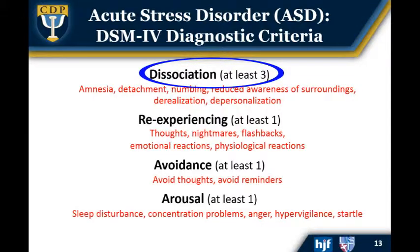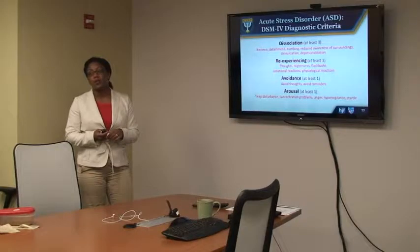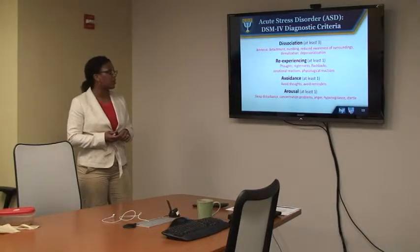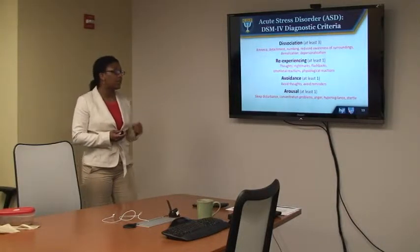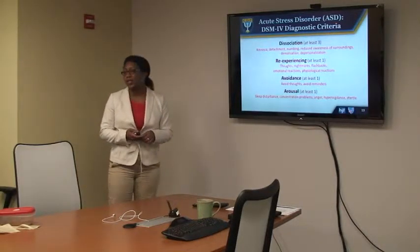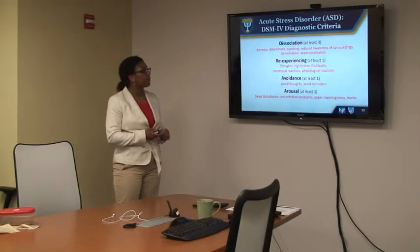We need to have at least 3 dissociative symptoms, in addition to the other symptom clusters of PTSD, to have acute stress disorder — and again, with a duration of less than 30 days.